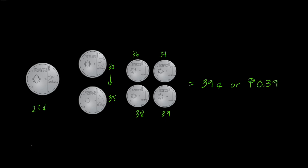Or we can simply add: 25 centavos plus 10 centavos plus 4 one-centavo coins. So 25 plus 10 plus 4 is simply equal to 39 centavos, or in pesos, this would be 0.39 pesos.